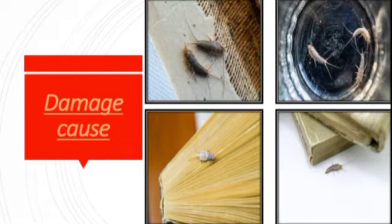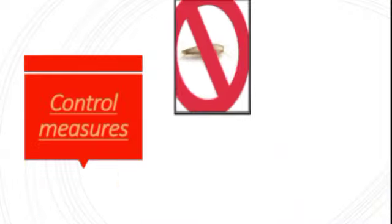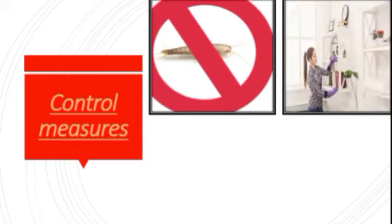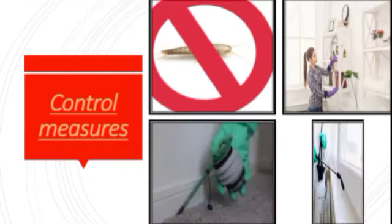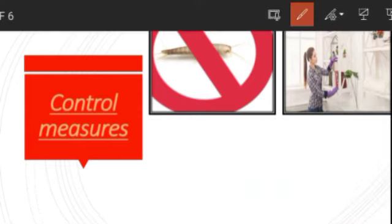Now let us go for the control measures. First of all, you should keep cleanliness. Bookshelves should be clean, and any moist or damp area with high humidity, like shelf corners, must be kept clean. Books not in regular use should be exposed to sunlight so that silverfish infestations inside them are removed.